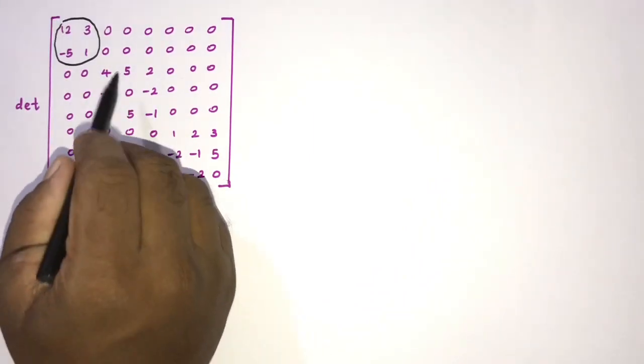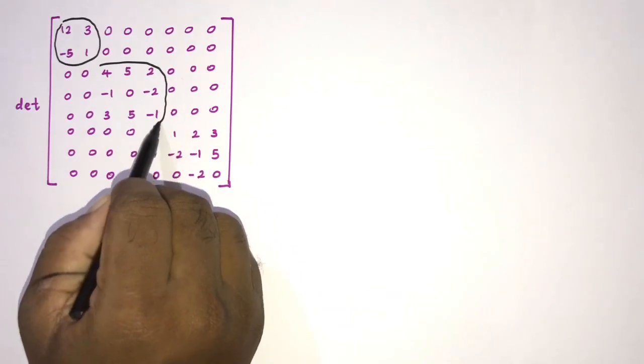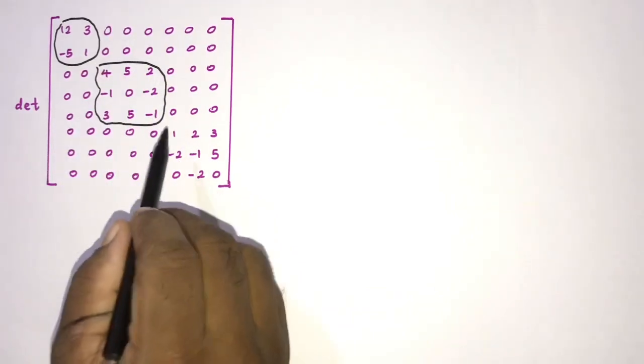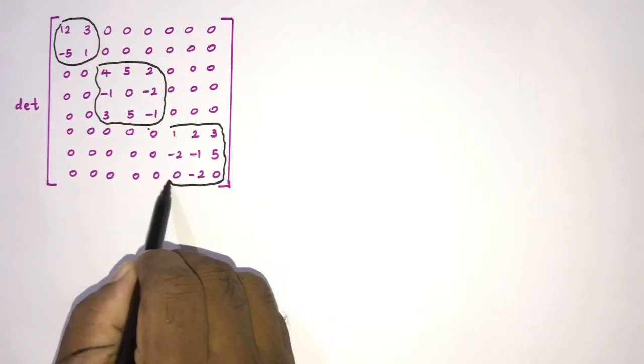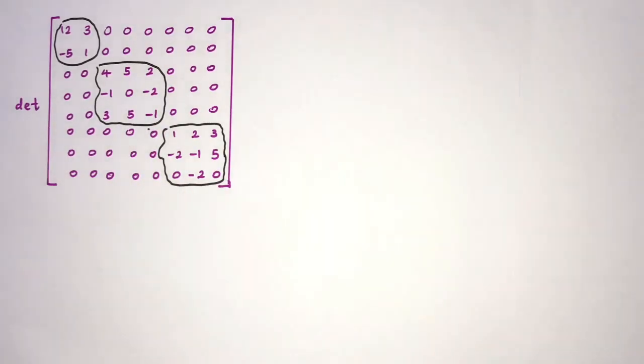Here we have 12, 3, minus 5, 1, and here. Now I think you know the pattern. This is a diagonal block matrix.